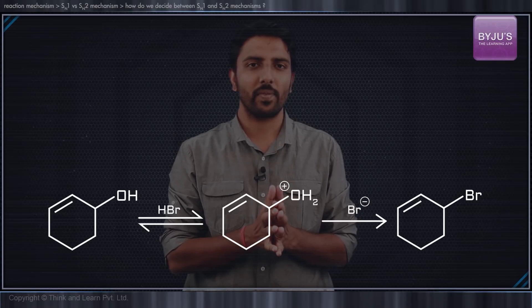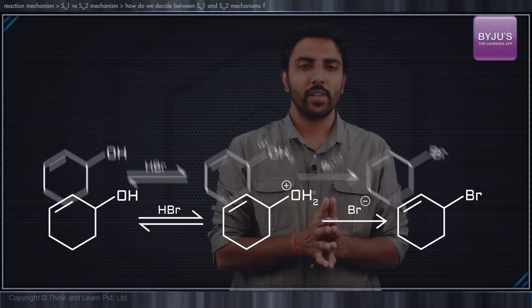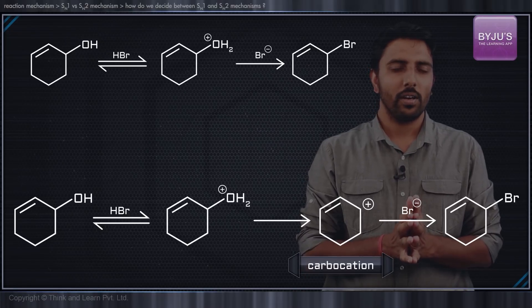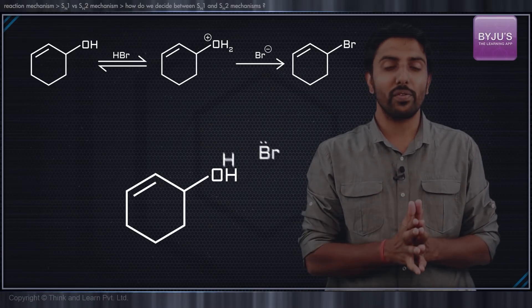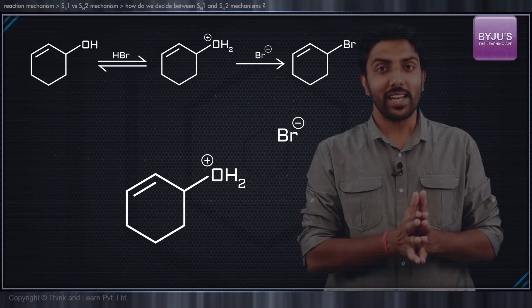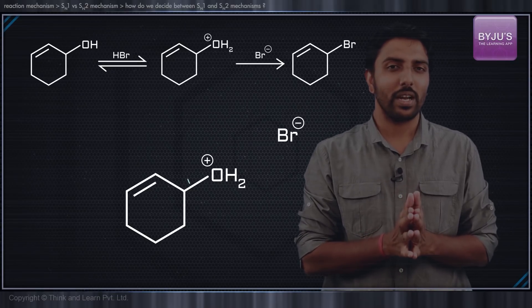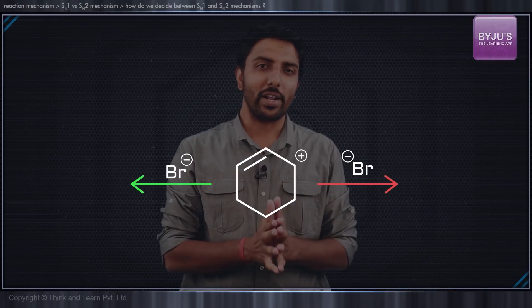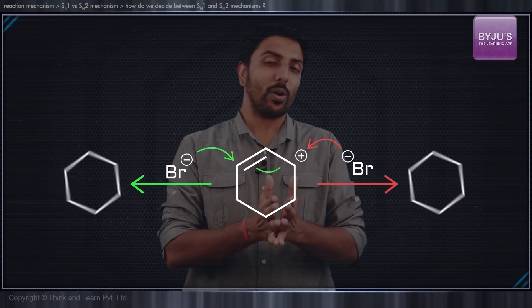As we see, the first step is the formation of the carbocation. This is achieved by protonation of the OH group, and since H2O is a very good leaving group, it leaves behind a carbocation. This carbocation is stabilized by delocalization of charge.